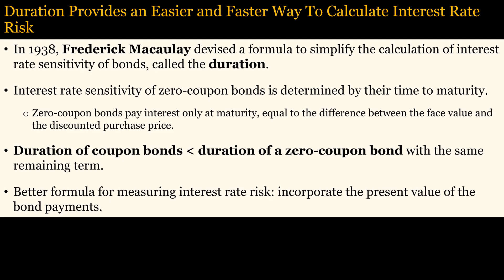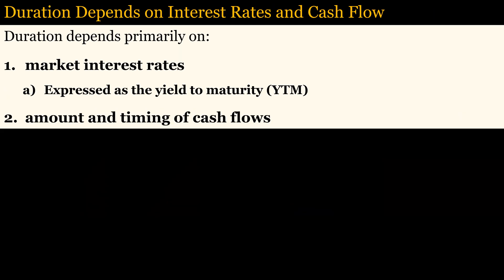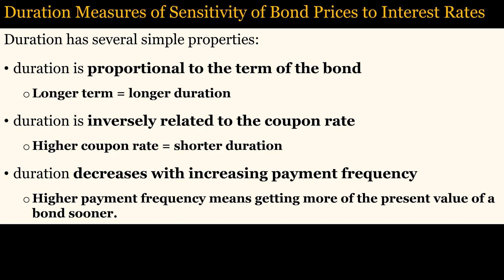In 1938, Frederick Macaulay devised a formula to simplify the calculation of interest rate sensitivity of bonds, called duration. The interest rate sensitivity of zero-coupon bonds is determined by their time to maturity. Zero-coupon bonds pay interest only at maturity, equal to the difference between the face value and the discounted purchase price. However, bonds that pay coupons always have a shorter duration than a zero-coupon bond with the same remaining term, so coupon bonds are less sensitive to changes in the interest rate. The longer the duration, the more a bond's price will change with interest rates.